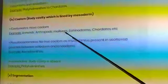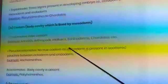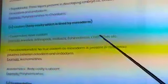Coelomates have coelom. Examples: annelids, arthropods, molluscs, echinoderms, chordates, etc.